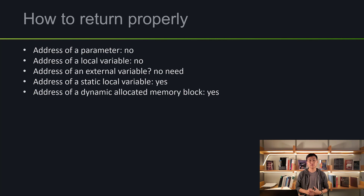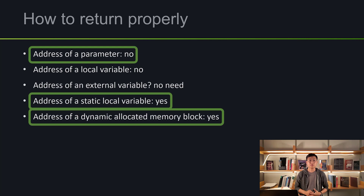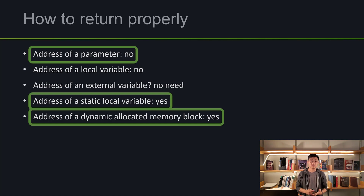Out of these five, the bottom two — static local variable and dynamically allocated memory — will always return properly. The other three will not. For today's examples, we're going to look at three different cases: the first is address of a parameter, and the last two are the returns that work properly. The other two I want you guys to experiment with on your own.